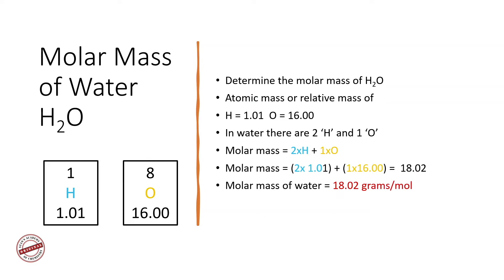The unit of molar mass is grams per mole, and that is also a conversion unit. For every mole of a substance, the mass expressed in grams is what we are going to use as a conversion unit.